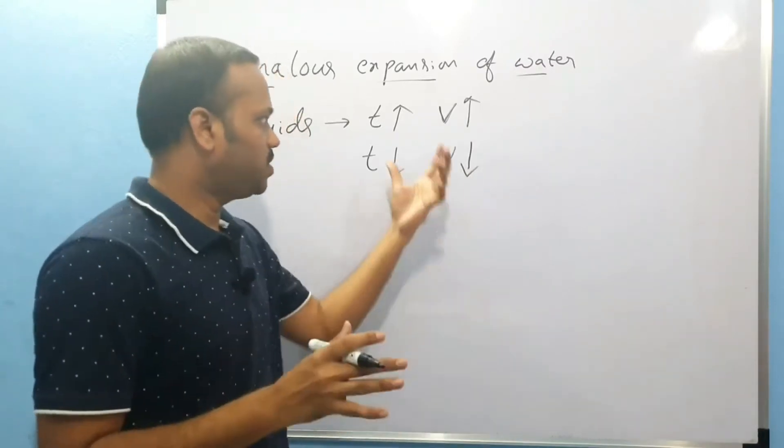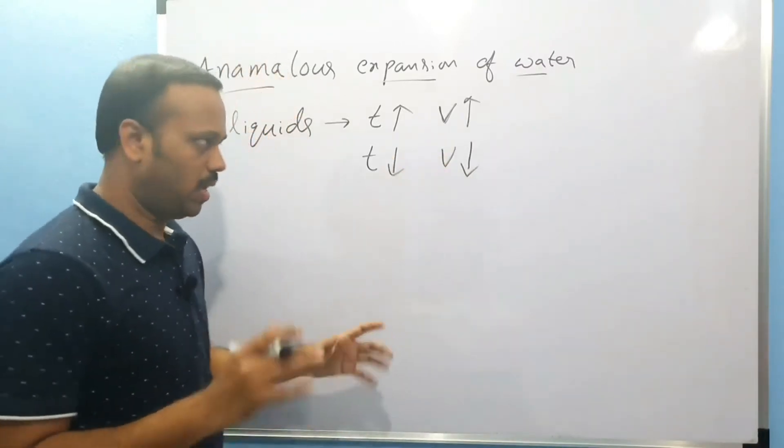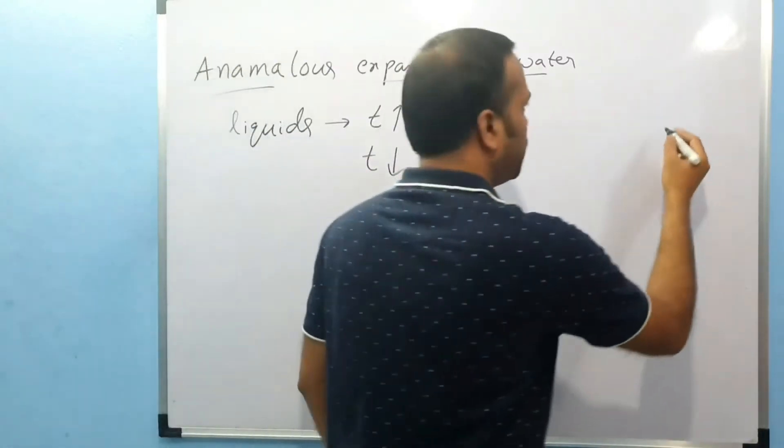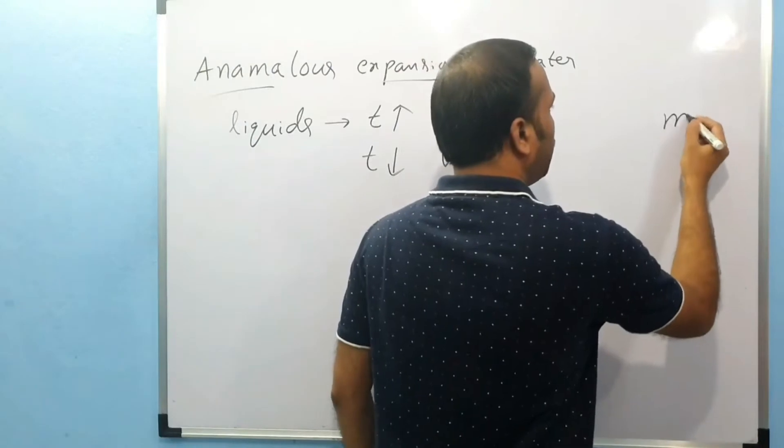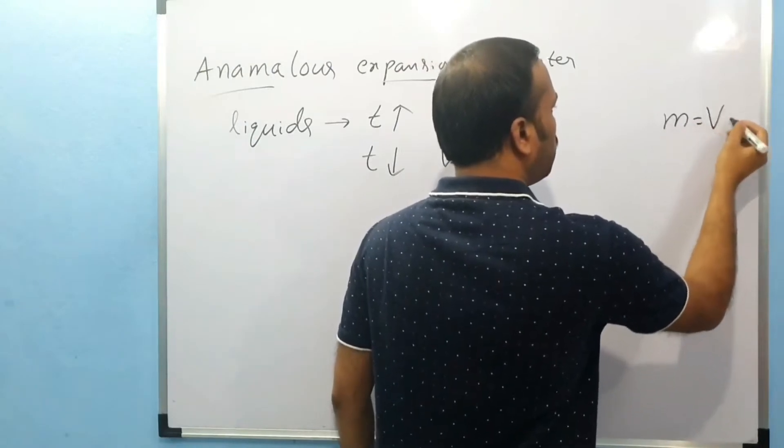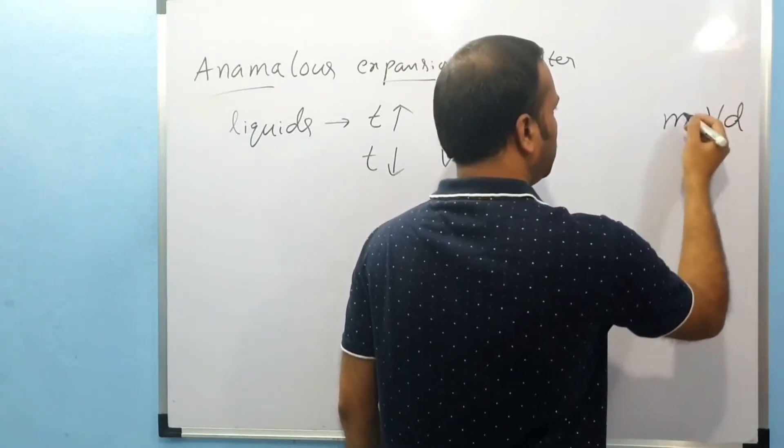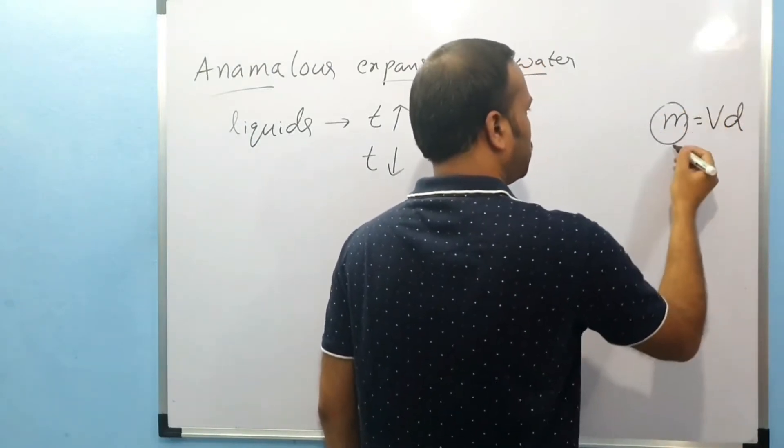From the mass formula: mass equals volume times density. Mass is also constant.